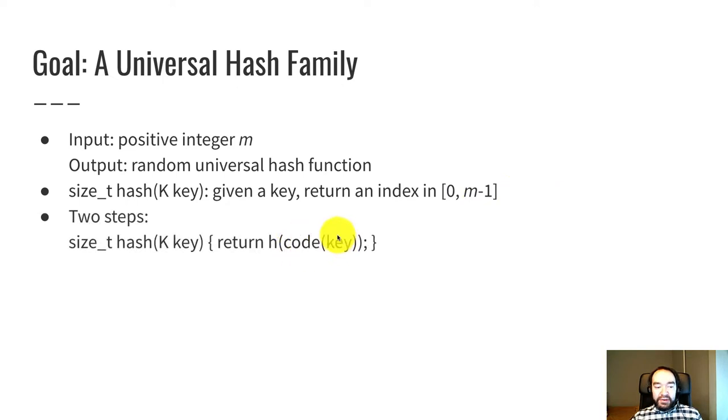There's a hash code step that takes the key of type k and maps it into an unsigned integer. And then there's a function h that takes a hash code, which is a non-negative integer, and maps it into an index in this range and also guarantees that collisions are unlikely.